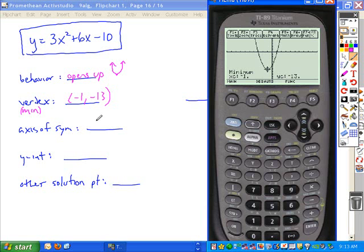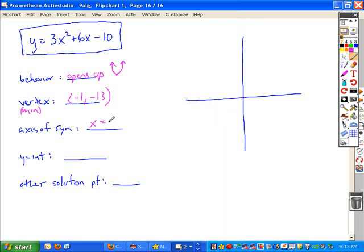The axis of symmetry is always going to be of the form X equals, and then it's the X coordinate of your vertex, so negative 1. The Y-intercept is always your constant, so it's the point 0, negative 10.